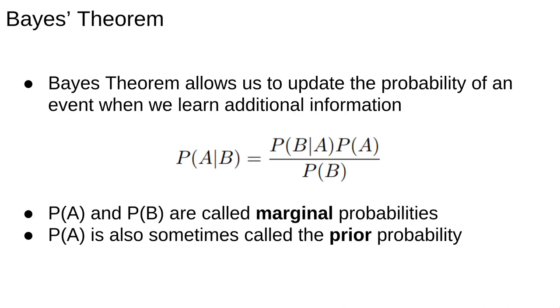When talking about Bayes' theorem, we call P(A) and P(B) marginal probabilities and refer to P(A) as a prior because it is the probability of A happening before we knew B happened and represents our prior belief about A before we knew that B happened.